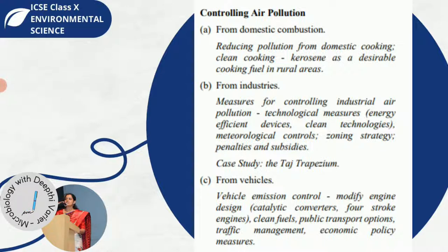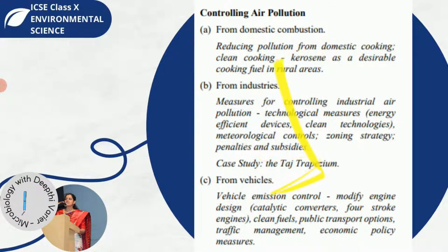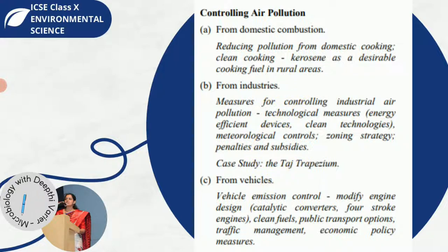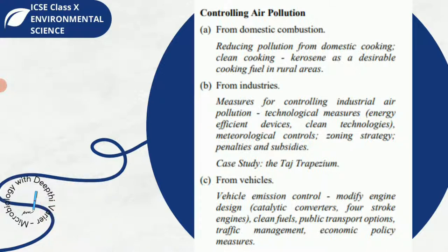However, we will focus on how to control air pollution from mainly three sources — domestic combustion, industries, and vehicles. What can be done to avoid or reduce pollution from each of these? These are the three headings we will deal with in this video.